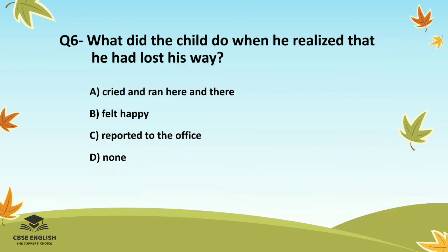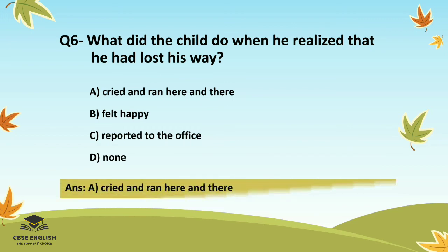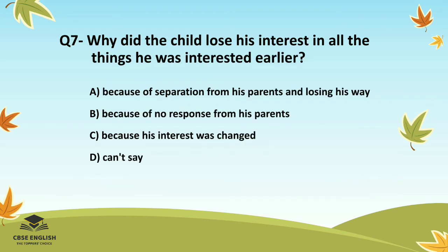Question number six: What did the child do when he realized that he had lost his way? Options are: cried and ran here and there; felt happy; reported to the office; or none. The correct answer is cried and ran here and there.